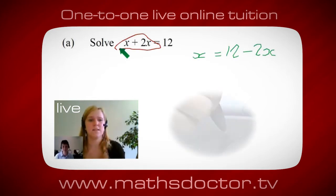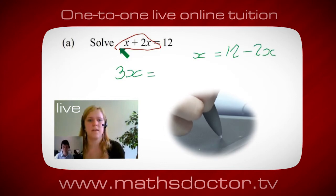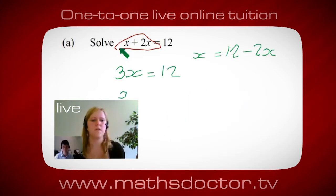Oh okay, it's 3x isn't it? Yeah, absolutely. So 3x equals twelve. Oh, and so x equals four. Brilliant. Spot on. Well done.